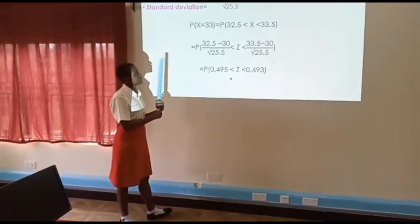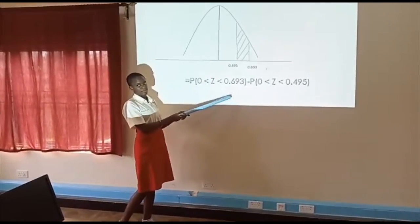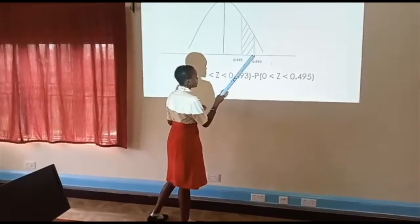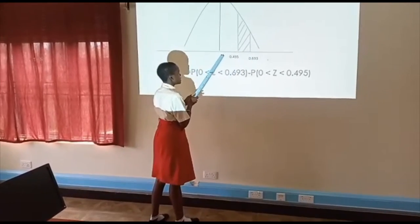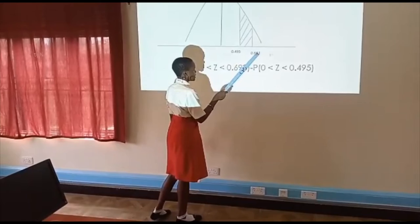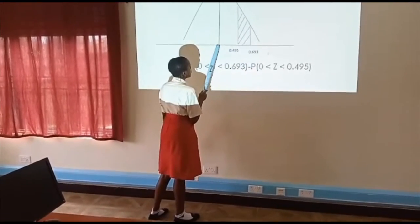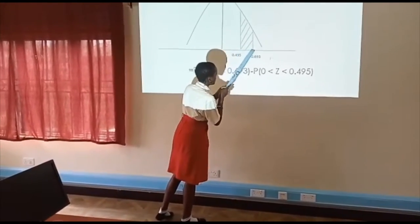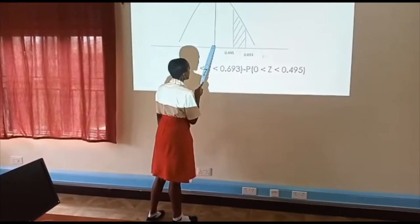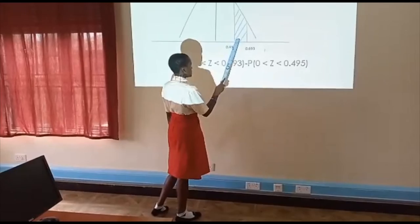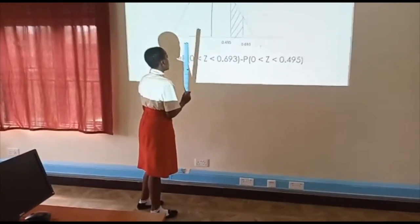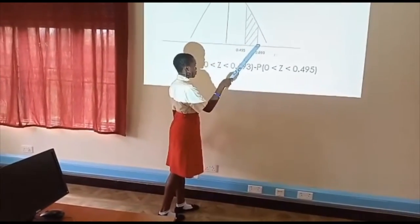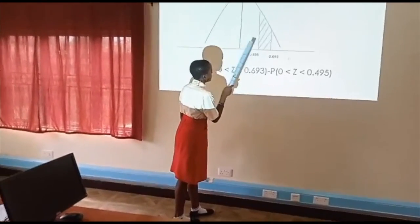We can represent this on a normal distribution curve. This is a normal distribution curve and they want us to find what's between the two values. So we read the probability from 0 to 0.693 and we subtract what's from 0 to 0.495. We realize that we are getting what's from 0 to 0.693 and we are taking off from 0 to 0.495. So to get what's here, we read from 0 less than Z less than 0.693, we take off 0 less than Z less than 0.495.